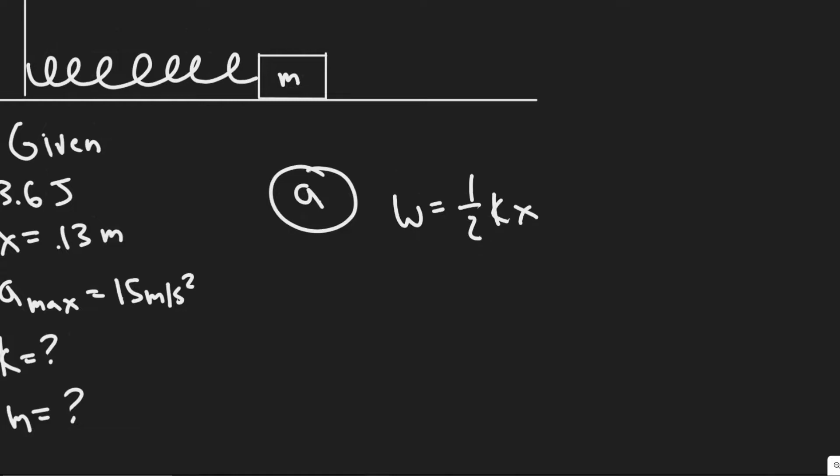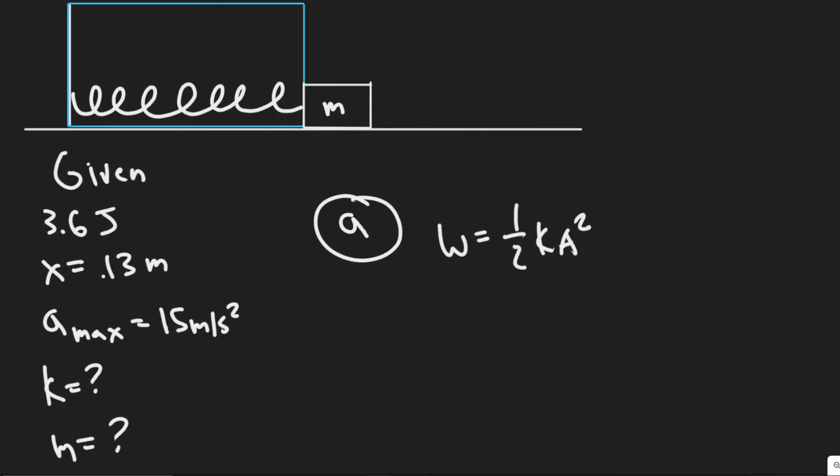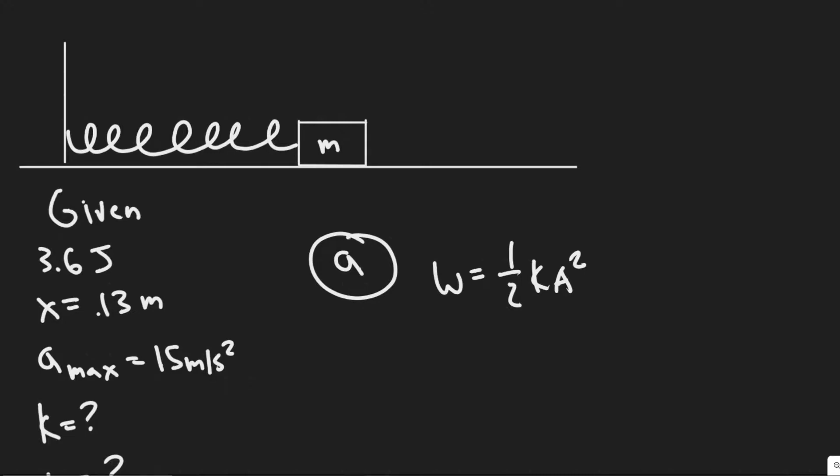Where A and x just represent the distance that you're compressing it. Because when I compress this spring, it's going to build up some elastic potential energy. You can imagine when I push on this spring and then I let go, it's going to push back. So what we're building there is elastic potential energy.